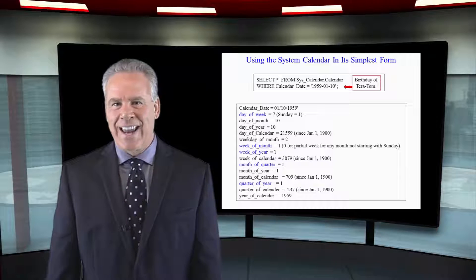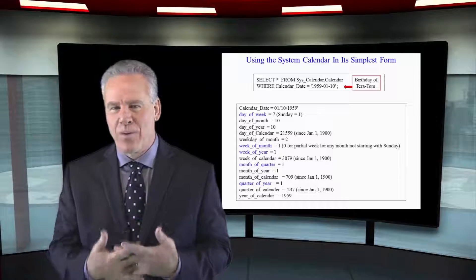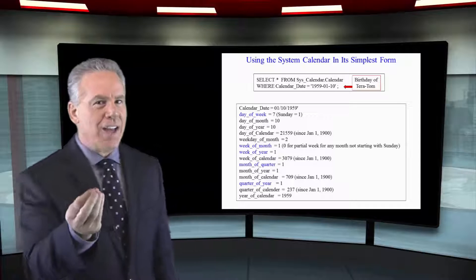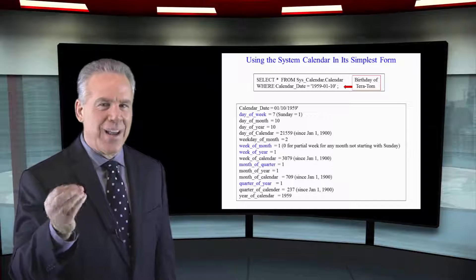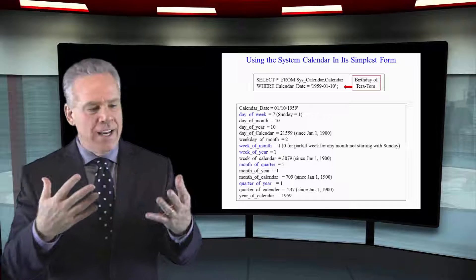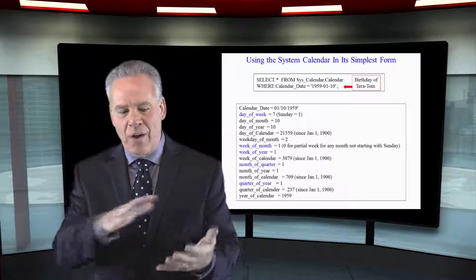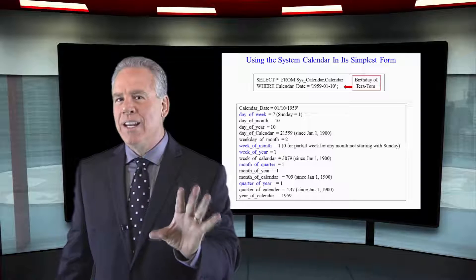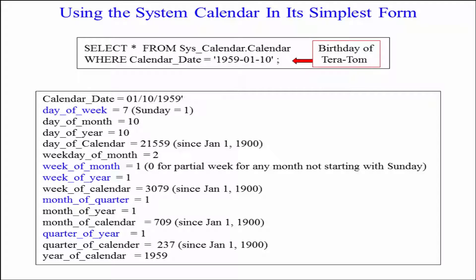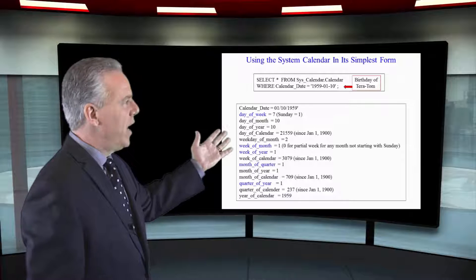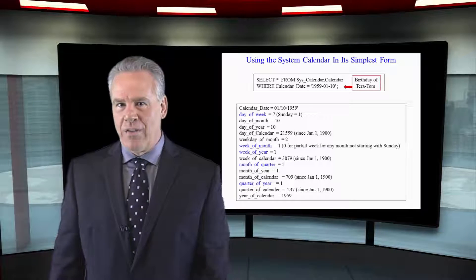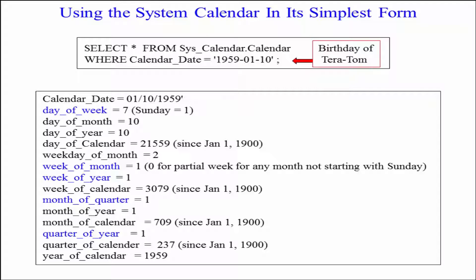I'm going to use the sys calendar to find out everything about my birthday. Now, that's not its real purpose. I will use this calendar and join it to any table that has a date in it. Let's just look at how this works: I say SELECT everything FROM sys_calendar.calendar WHERE the calendar date is equal to my birthday, and it goes, sure, I'll tell you everything about that day.